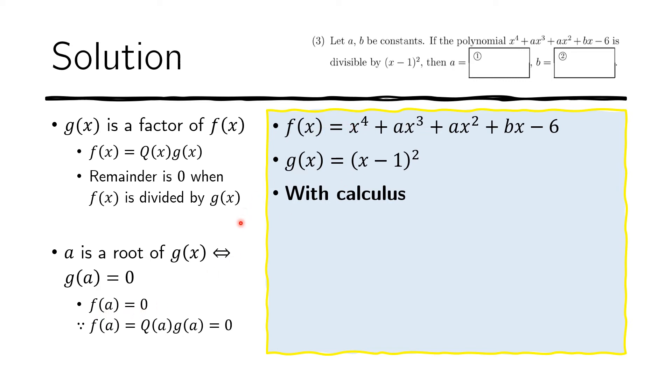So the way we use this is as follows. F of one, because we know that one makes this zero. We know that one is a root of G of X because G of one equals zero. So F of one, according to this, must also be zero. Furthermore, we can also use this. So if we plug in one here and plug in one and everything,